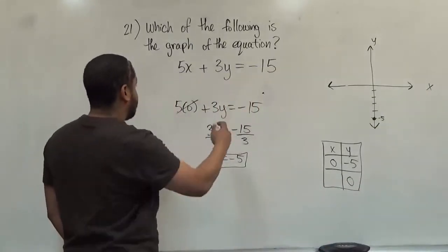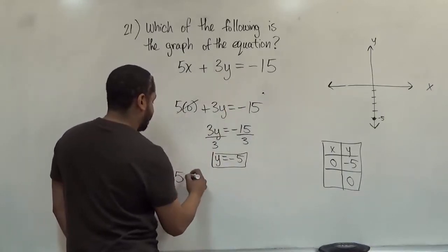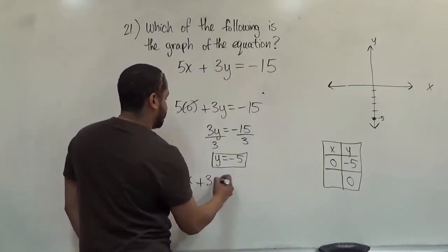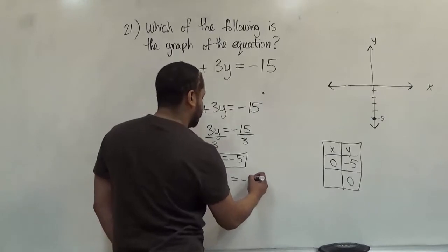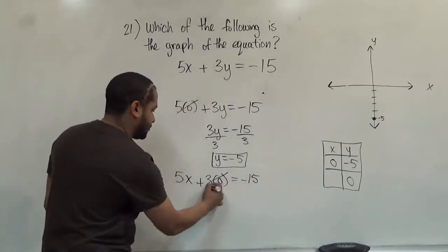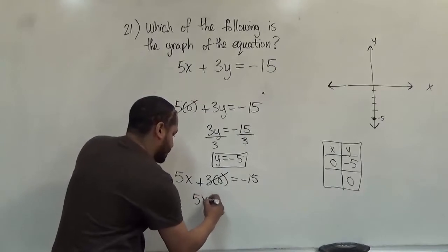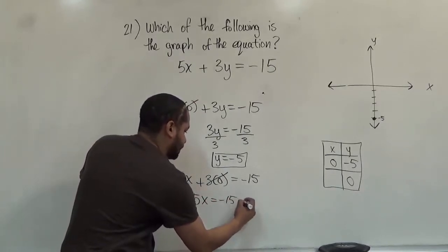So we're taking the same equation and we're substituting a 0 for y. So we have 5x plus 3 times 0 equals negative 15. And here my 3 is going to go away with the 0. And I have 5x is equivalent to negative 15.